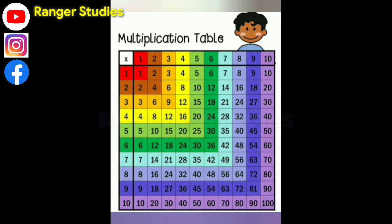3 1s are 3, 3 2s are 6, 3 3s are 9, 3 4s are 12, 3 5s are 15, 3 6s are 18, 3 7s are 21, 3 8s are 24, 3 9s are 27, 3 10s are 30.